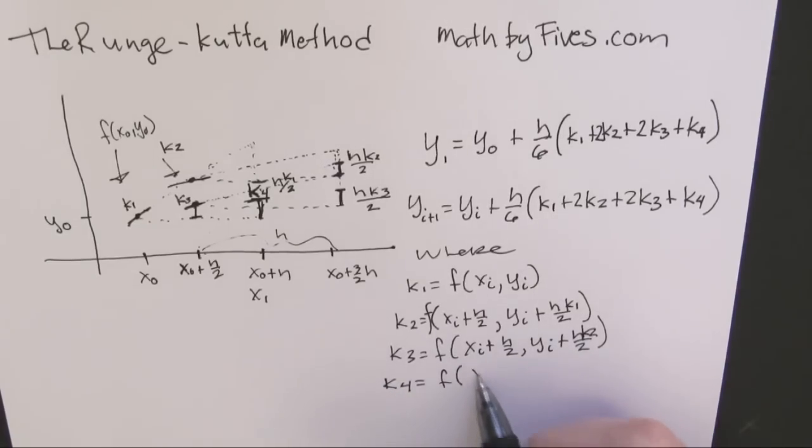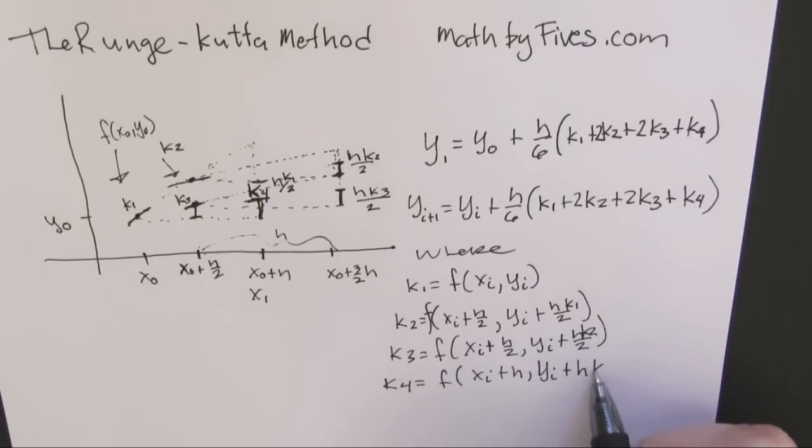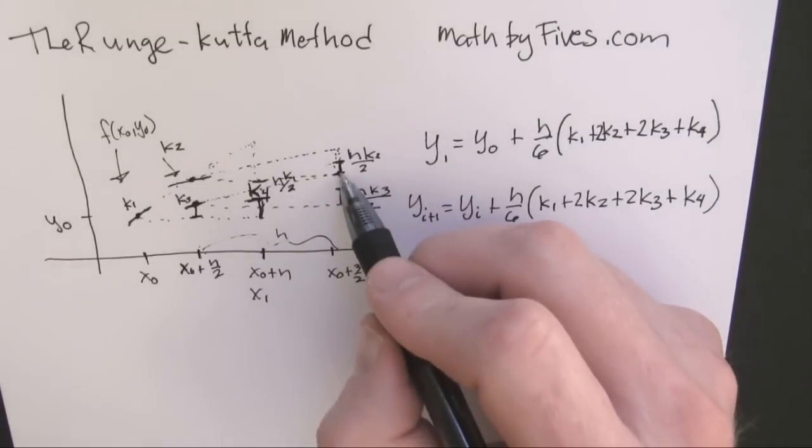And now k2 is your slope field evaluated at the point you were at plus h over 2. And then that's here. There we go.